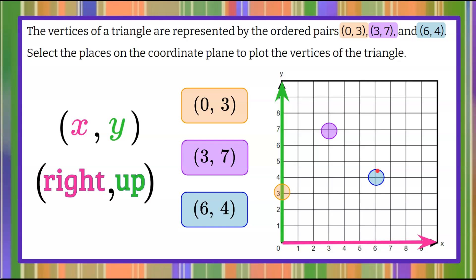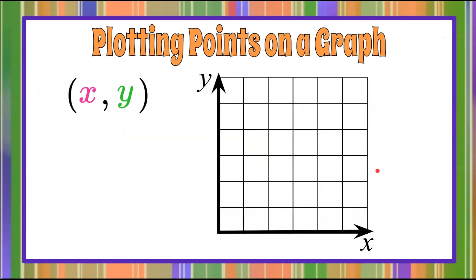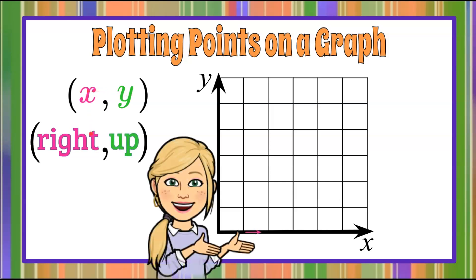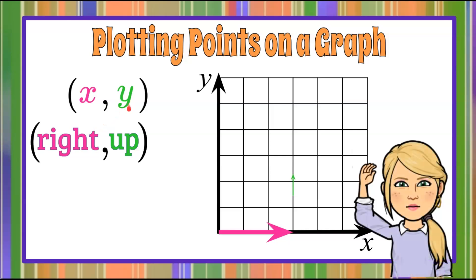That's how you plot an ordered pair on the coordinate plane. Thanks for joining me today, where we learned about ordered pairs x, comma, y in parentheses. First value x tells you where to go right, and y value tells you from that distance how far to go up, and then plot your point.